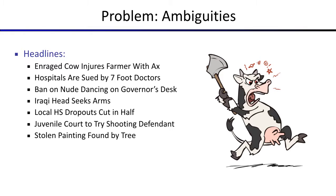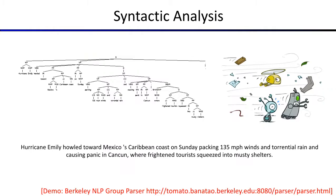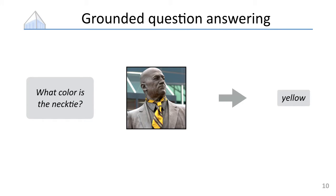Now what do we do with these parse trees? I want to talk about one particular application that's useful for tons of downstream stuff — a question answering problem that I actually worked on last year. The setup is: I have a question like 'what color is the necktie,' I have a photograph, and I want to map from the photograph and question to the answer, which is yellow. This is a vision task, and as suggested by our neural nets lecture, most vision nowadays uses neural networks.